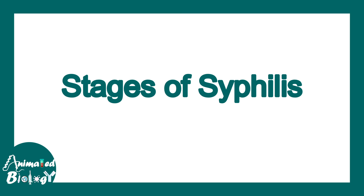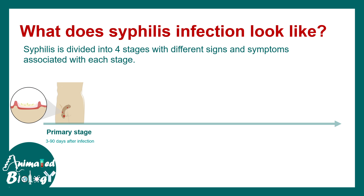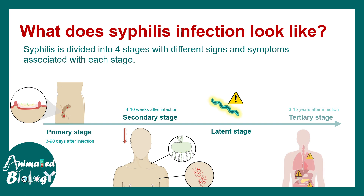Syphilis is a deadly sexually transmitted disease with distinct stages. It begins with the primary stage, which occurs within 3 to 90 days after infection. Then there is a secondary stage, generally lasting 4 to 10 weeks after infection. This is followed by a latent stage with no apparent problems, and finally a tertiary stage occurring 3 to 15 years after infection, involving organ failures and multi-organ infection.